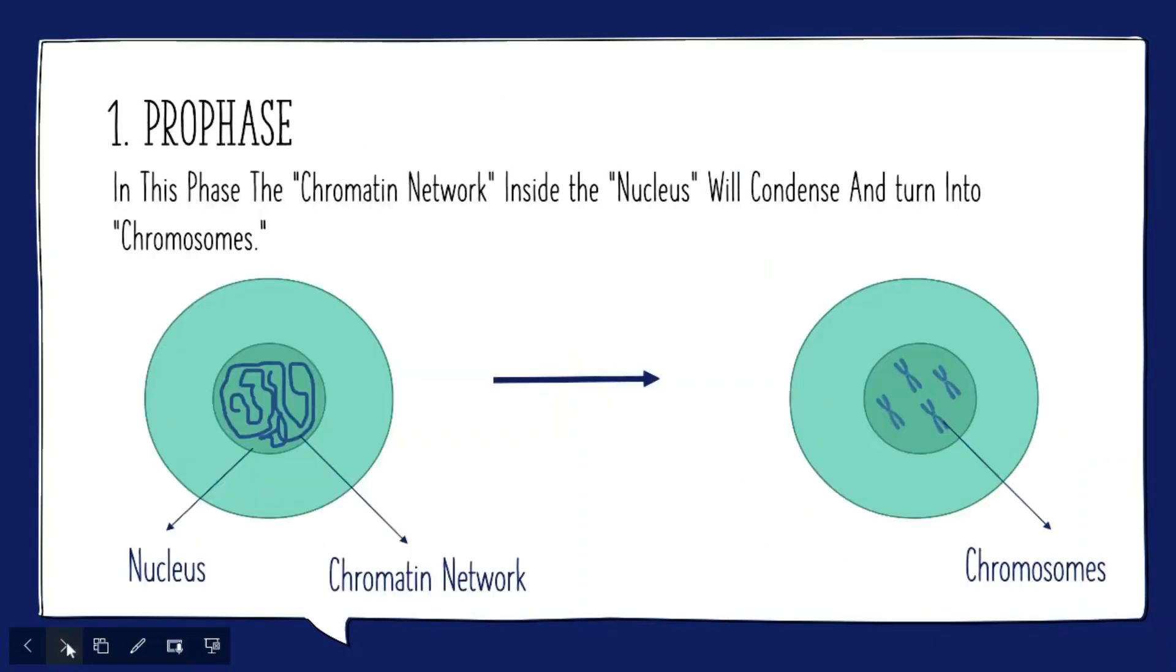Now let's come over to the first phase of cell division which is known as prophase. In this phase the chromatin network inside the nucleus will condense and turn into chromosomes.